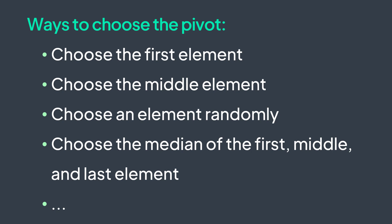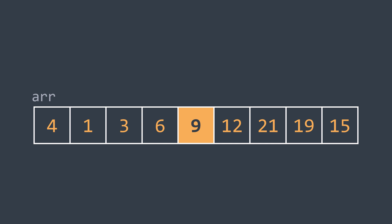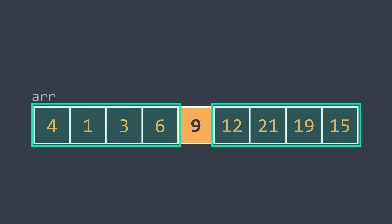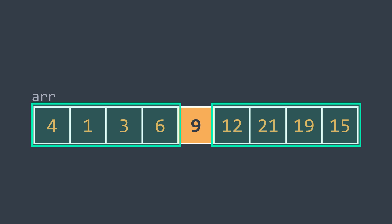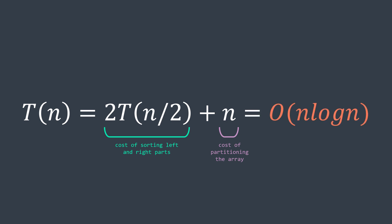Now for the complexity analysis. The best case of quicksort is when the pivot is always the median of the array, because after partitioning the pivot will be in the middle. This means we need to sort two subarrays of n/2 elements each — the same as in merge sort. In that case, T(n) = 2·T(n/2) + n, where n is the cost of partitioning. Using the Master Theorem, this gives an O(n log n) time complexity in the best case.